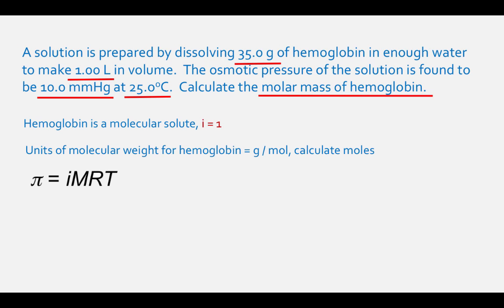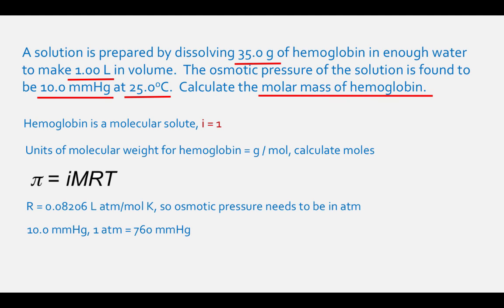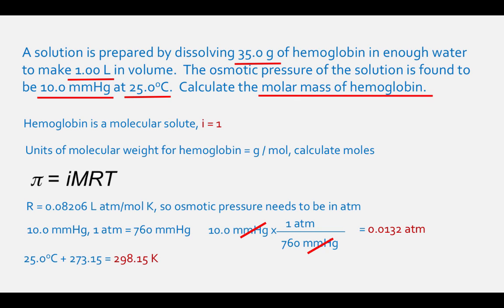The gas constant has a value of 0.08206 liters times atmospheres per mole times Kelvin, so osmotic pressure needs to be in atmospheres. Converting 10.0 millimeters of mercury: 10.0 divided by 760 equals 0.0132 atmospheres. The temperature must be in Kelvin: 25.0 degrees Celsius plus 273.15 equals 298.15 Kelvin.